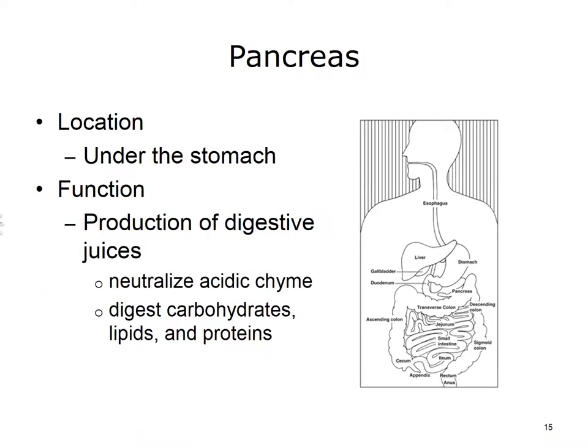The pancreas is a long, soft organ that lies behind the stomach and anterior to the spine. Its location is also referred to as retroperitoneal. The pancreas, an endocrine organ, is also an accessory gastrointestinal organ. The pancreas produces various digestive juices that not only help to neutralize the acidic chyme, but also help to digest carbohydrates, lipids, and proteins.